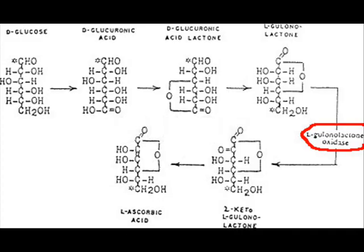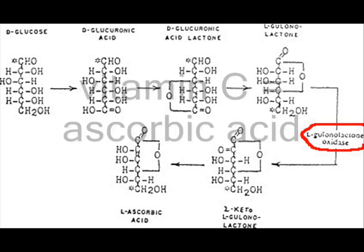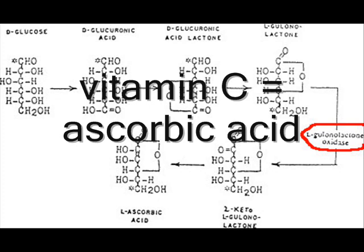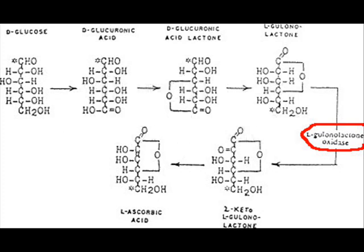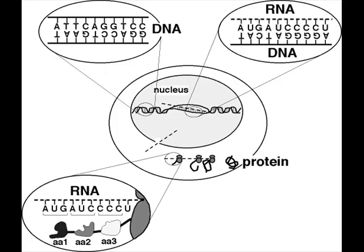L-gulonolactone oxidase is an enzyme that catalyzes a step in the set of reactions that makes vitamin C. So far, every animal that we've examined has a copy of the gene that codes for this enzyme. However, in all animals that are susceptible to scurvy because they don't make their own vitamin C, this gene is mutated in such a way that it no longer makes the enzyme. So we have observed a direct cause and effect relationship between the lack of certain mutations in the gene and the production of vitamin C.